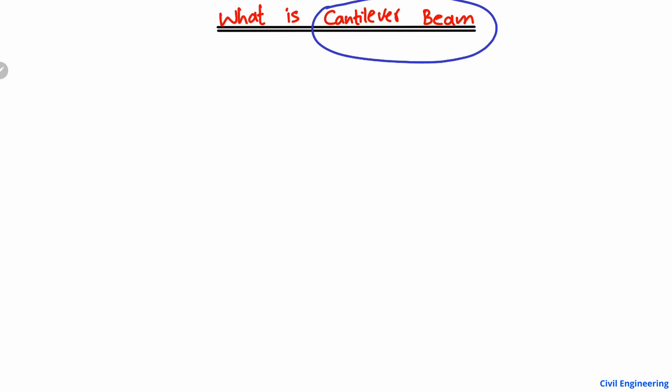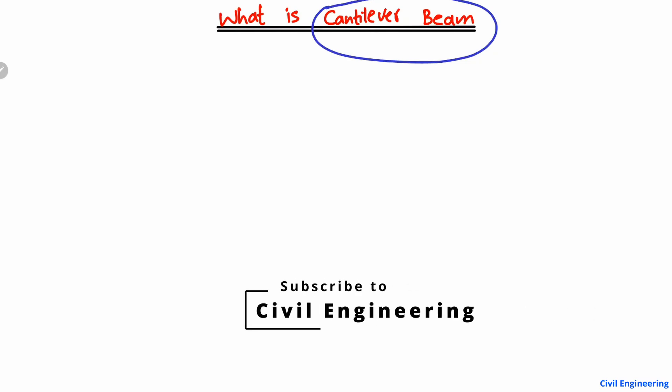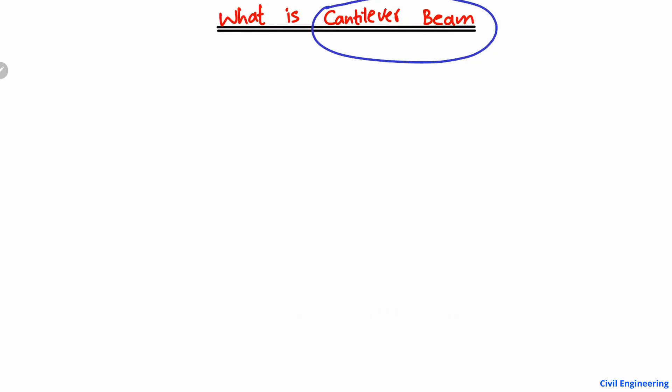We know that there are different types of beams, such as the simply supported beam, the fixed-end beam, the overhanging beam, the continuous beam, and so on. One of the types of beam is the cantilever beam. Now, how can we define and differentiate this type of beam from the other types?